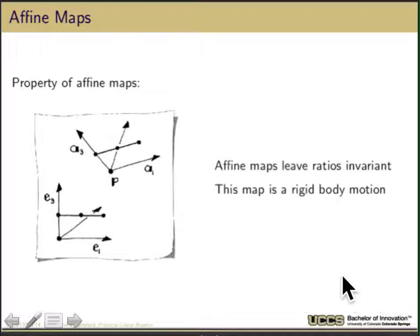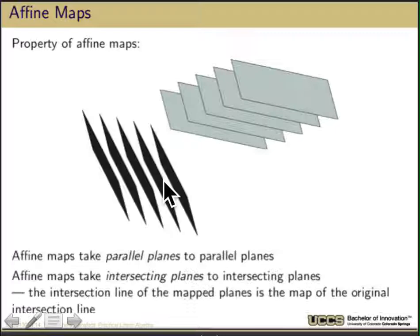Affine maps have some important properties. The first is that affine maps leave ratios invariant. If I look at the length of a line and cut it in half, the midpoint is a ratio between the two points that will be mapped, and the body in that sense becomes a nice rigid body. Affine maps take parallel planes to parallel planes and intersecting planes to intersecting planes, and the intersection of the mapped planes is the mapping of the original intersection.